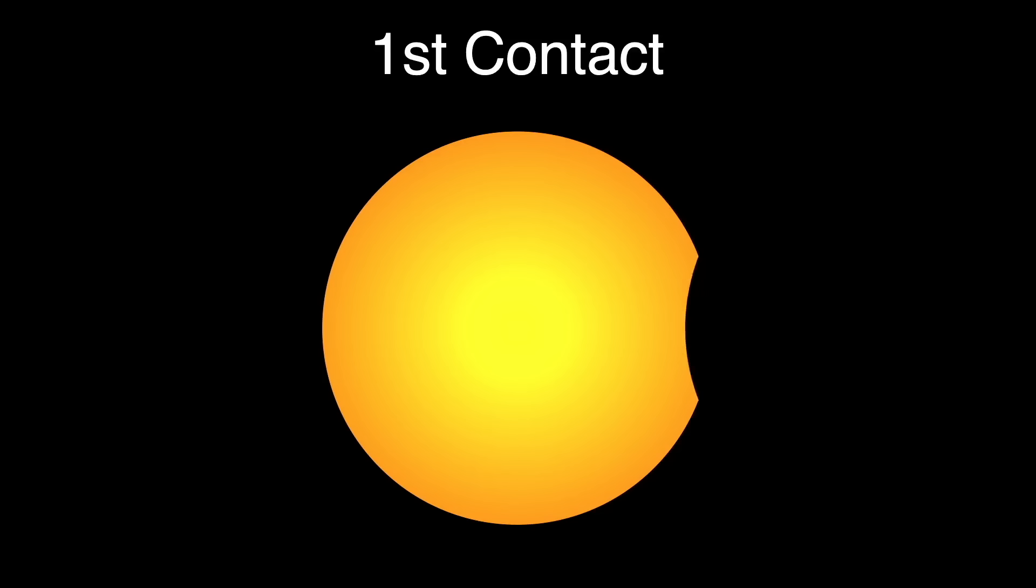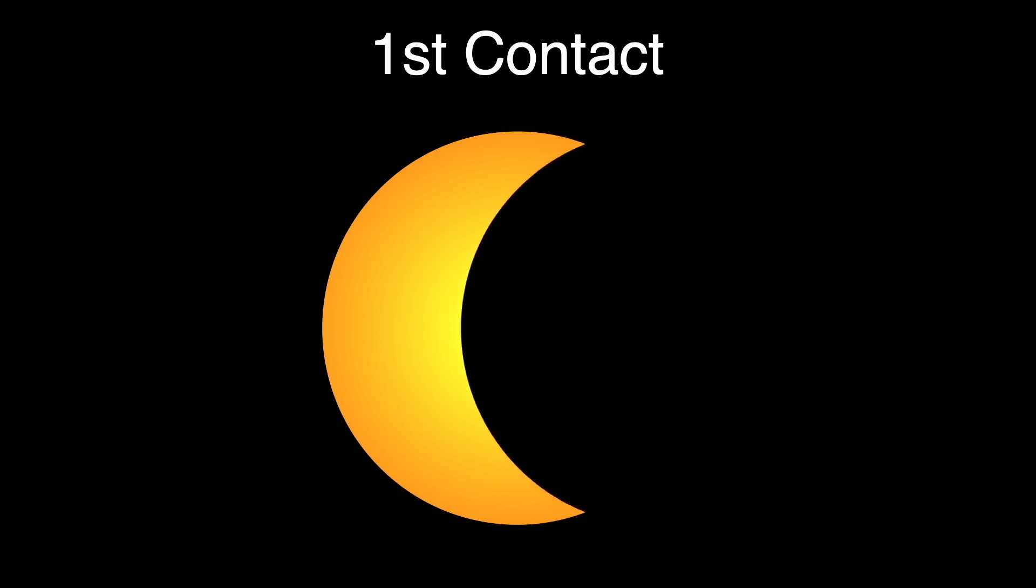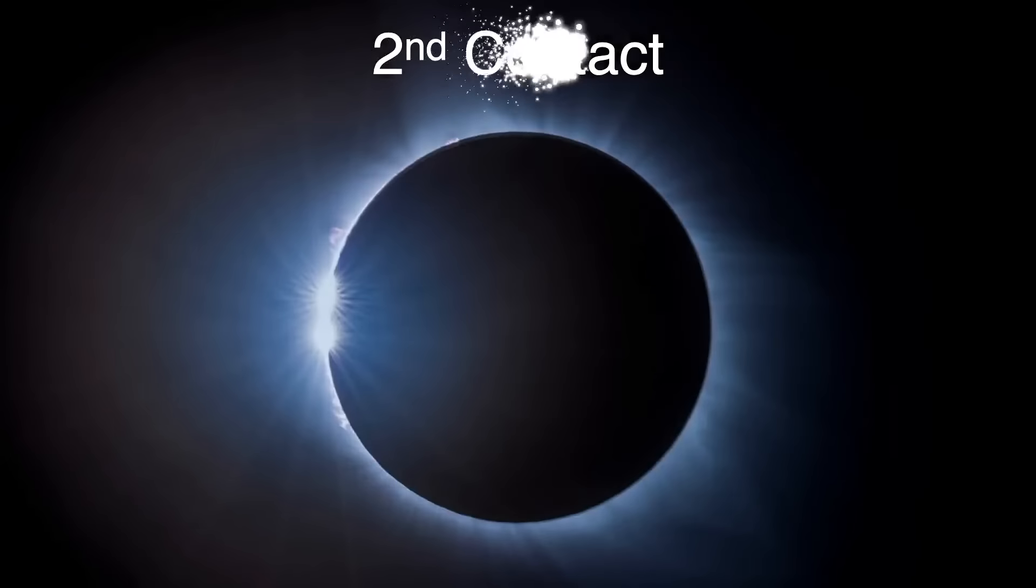Second contact, or C2, occurs when the moon just fully covers the disk of the sun.